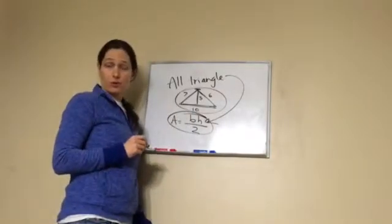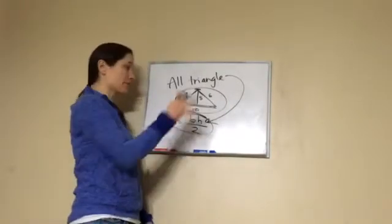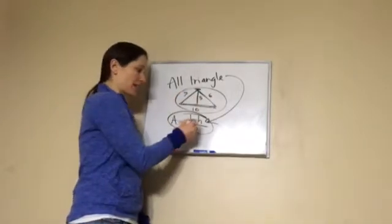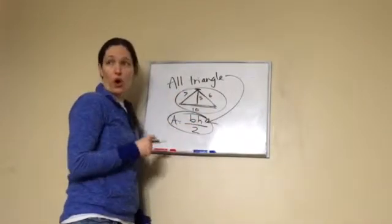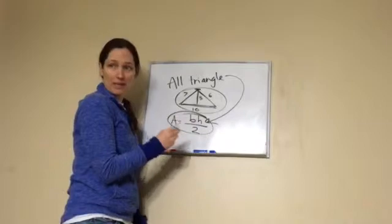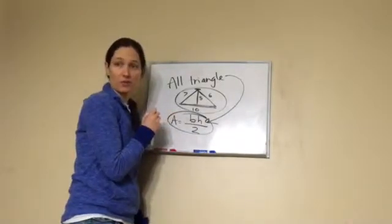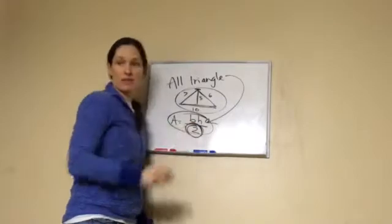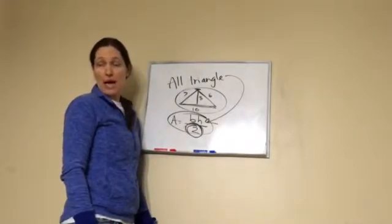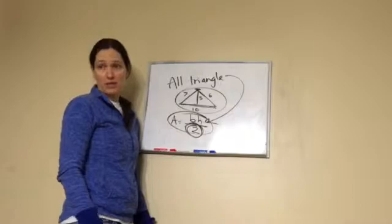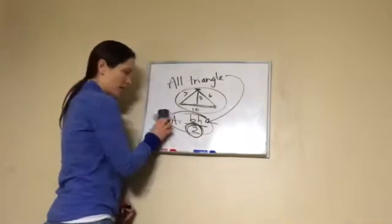So this is what you want to write down for your formula for the area of a triangle. Base times height divided by two, always. So many people will remember to do the base times the height, but guess what they forget to do? Divided by two. I didn't want a rectangle measurement, I wanted a triangle measurement.